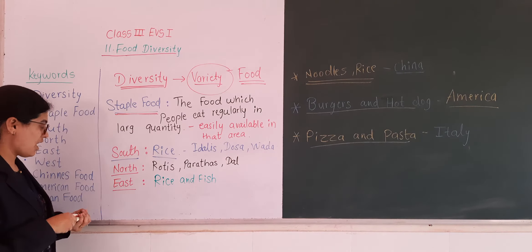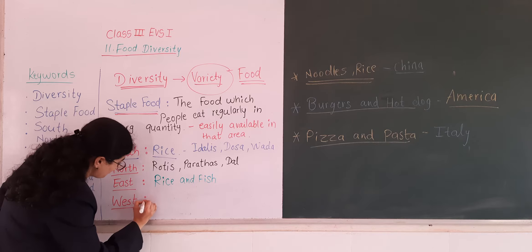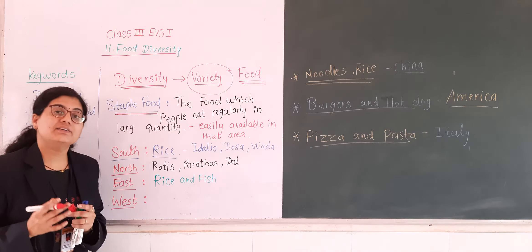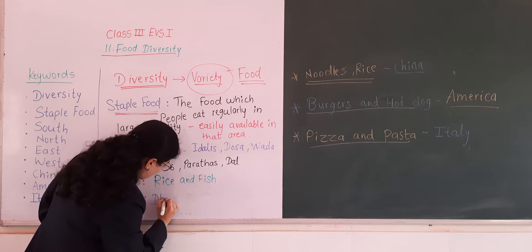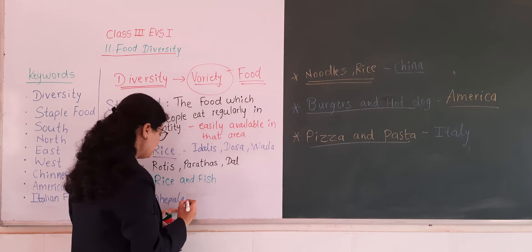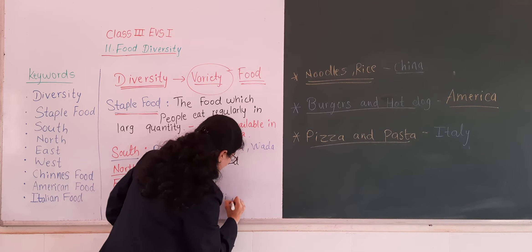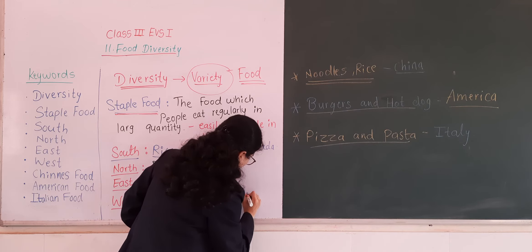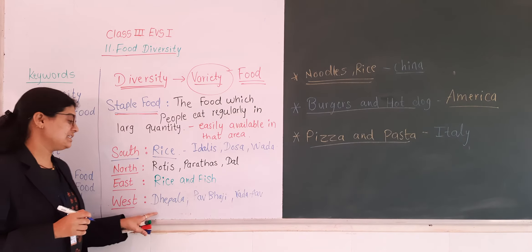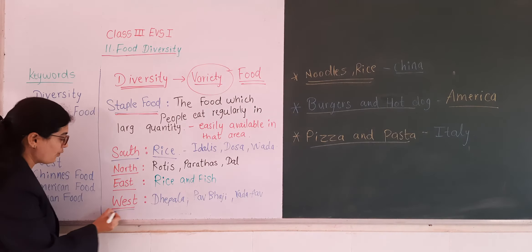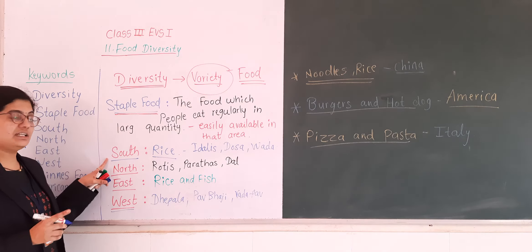Now let us see about west India. In west India, there are different food items which are the staple food of that region, as these food items are easily available there. We have learned about different regions having their own staple food because those food items are easily available in those regions.